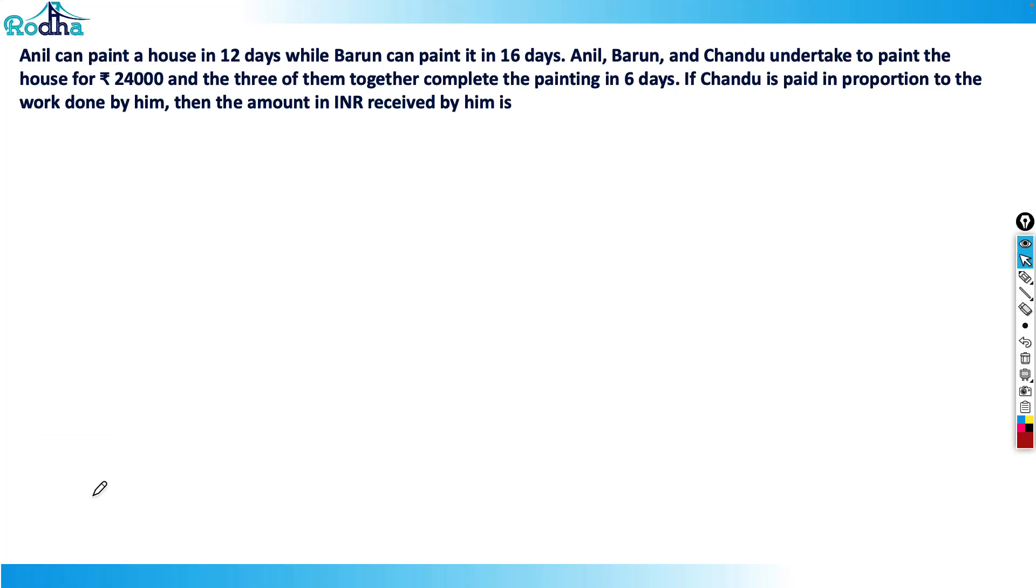Hi guys, this is an easy question from the Time and Work chapter in CAT 2021 Slot 3. The question says that Anil can paint a house in 12 days while Barun can paint it in 16 days. Anil, Barun, and Chandu are contracted to paint the house for ₹24,000 and the three of them together can complete the painting in 6 days.